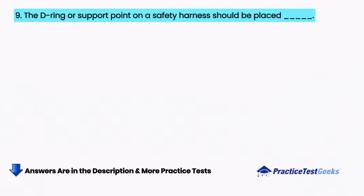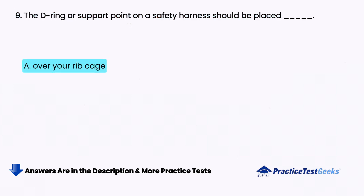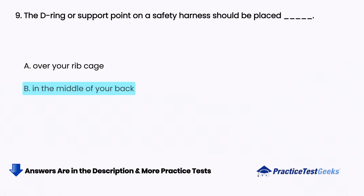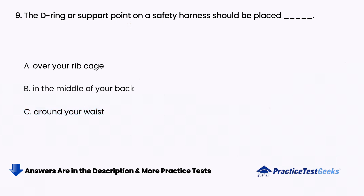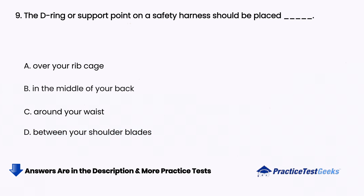The D-ring or support point on a safety harness should be placed blank. A. Over your rib cage, B. In the middle of your back, C. Around your waist, D. Between your shoulder blades.